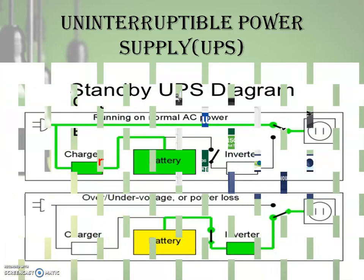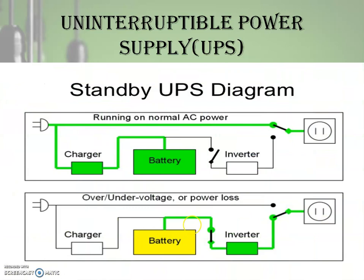This is a standby UPS system, showing the normal running condition as well as an over-voltage, under-voltage, or power loss condition. During normal operation, the supply from the utility feeds the appliance, and the battery is being charged through the charger; in this case the inverter is inactive. When a power outage occurs, the utility supply is disconnected. The inverter then comes into the picture — it takes the DC from the battery, inverts it into AC, and supplies that AC to the load or equipment, thus providing power to the appliances.